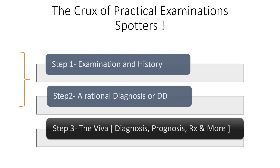Now the spotters have three components. Examination is usually a component; history is not. You have to arrive at a rational diagnosis — or TDR — based on the examination, and then comes the viva.